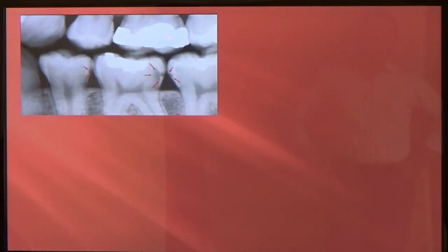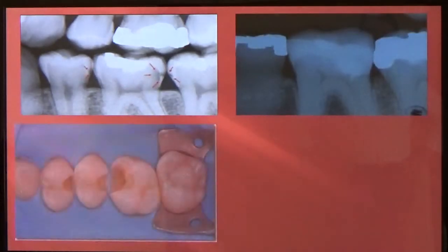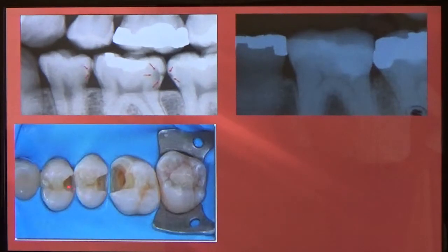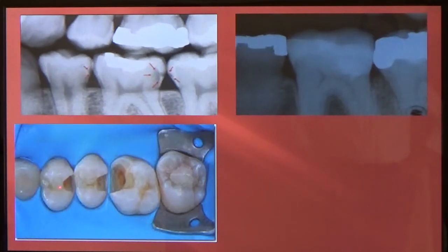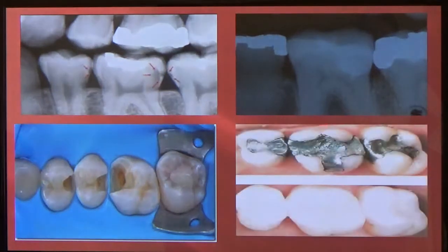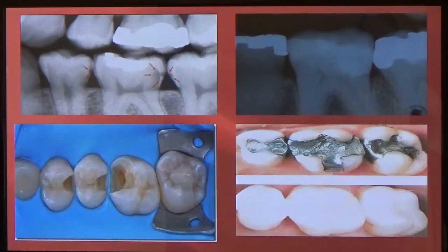This is a class 2 amalgam or a restoration — you can see how it breaks in between the contacts. Here they are prepared — this is how we cut into the cavities from the top, and we break a little box, and we can restore the proximal or the contact area between premolars or molar areas. Here are some metal amalgams, and there they are restored. These are class 2 cavity restorations.